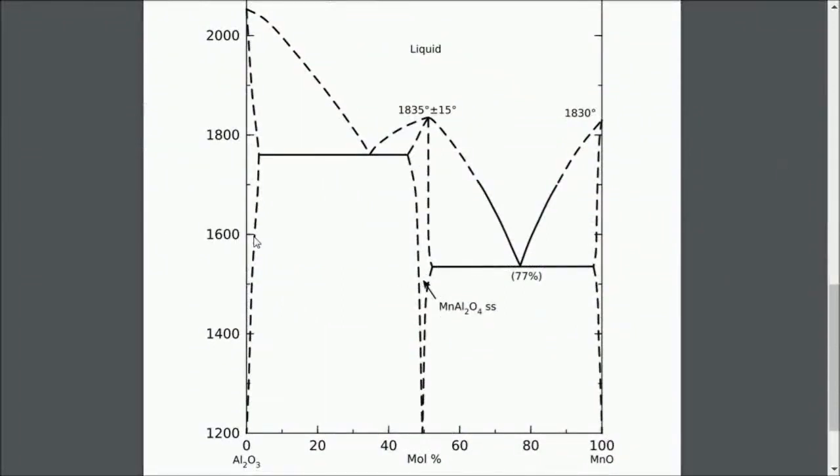You can see here the ranges of the various phases and critical points. Many of the critical points are labeled, but the information is not complete. This eutectic, for example, has composition information but doesn't have temperature. This peritectic has temperature but no composition. And this eutectic has no information at all.